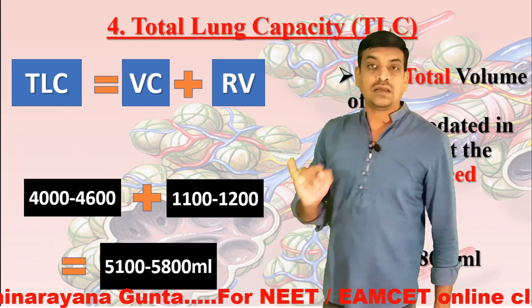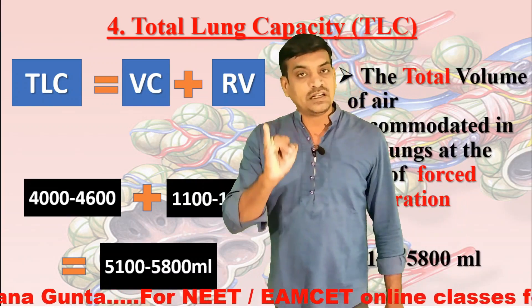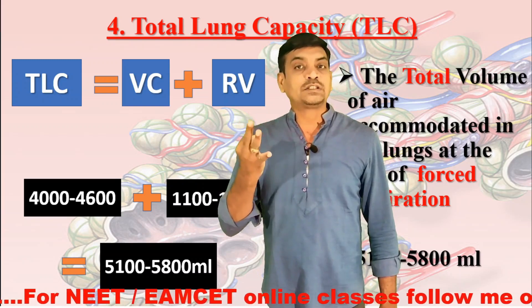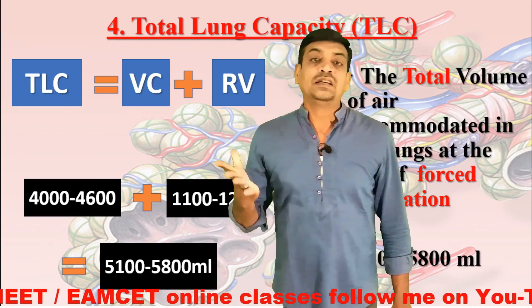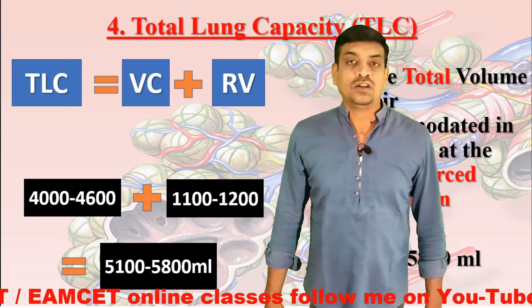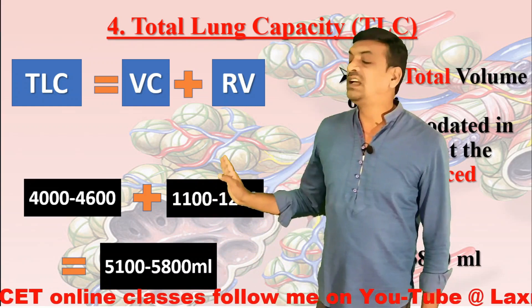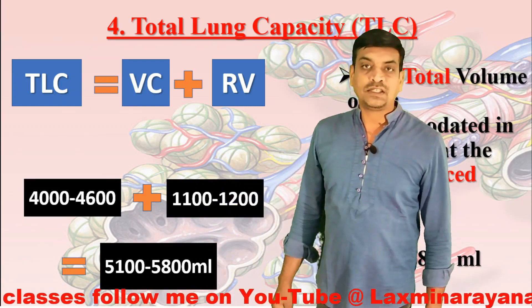The total lung capacity includes the tidal volume, the inspiratory reserve volume, the expiratory reserve volume, and the residual volume. These are all the different types of lung capacities.